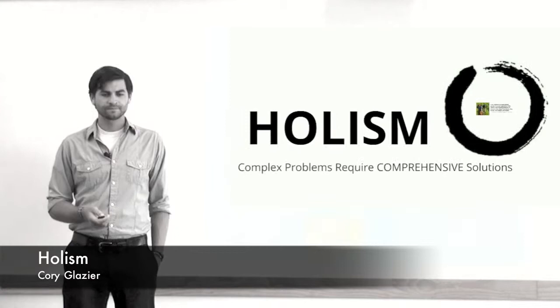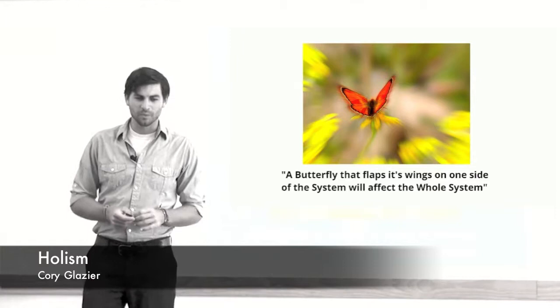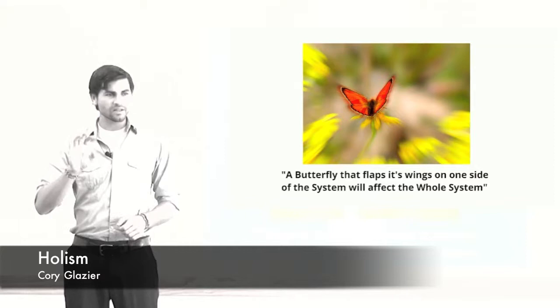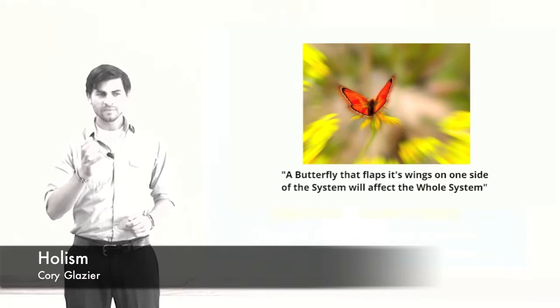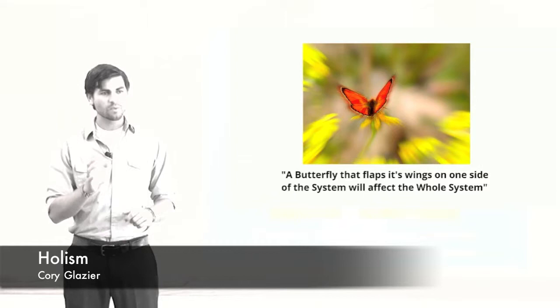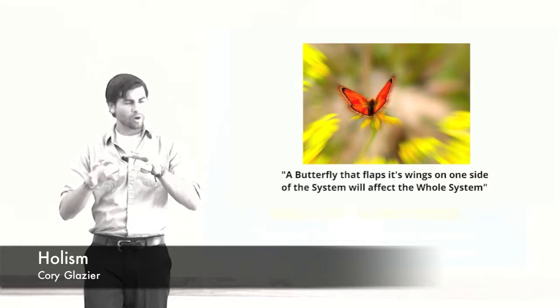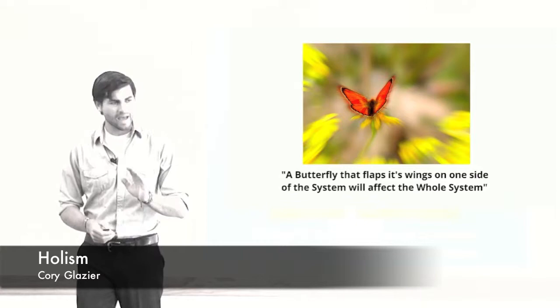A butterfly that flaps its wings on one side of the system will affect the whole system. Looking at this from a systems approach, we see it's all connected. As a community development agent or outsider, the more we can have respect and reverence for the fact that everything's connected, the more we'll approach the development setting as a system comprised of parts that are all part of one whole, rather than a bunch of individual autonomous parts — and that perspective sets us up for success.